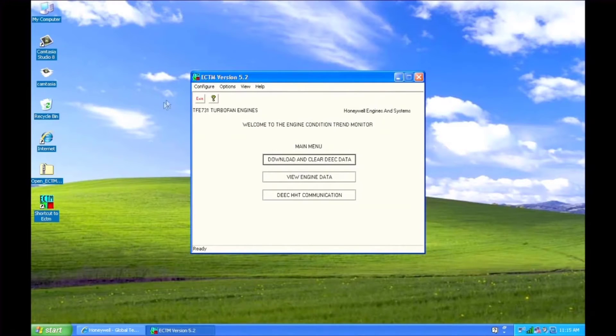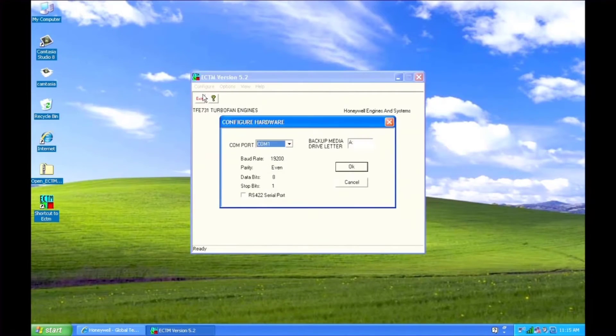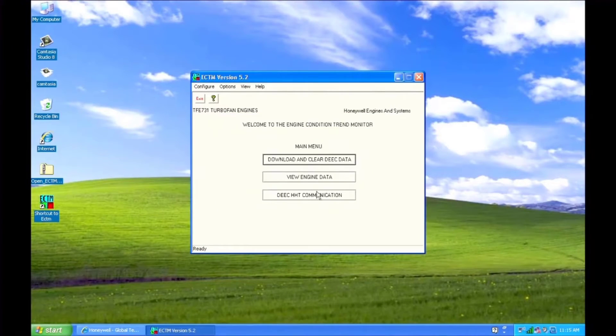In the ECTM program, go to the configure screen and select the COM port that's being used. The ECTM program is now configured to communicate with the DEEC.